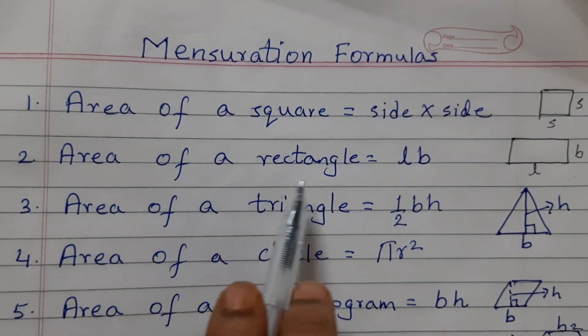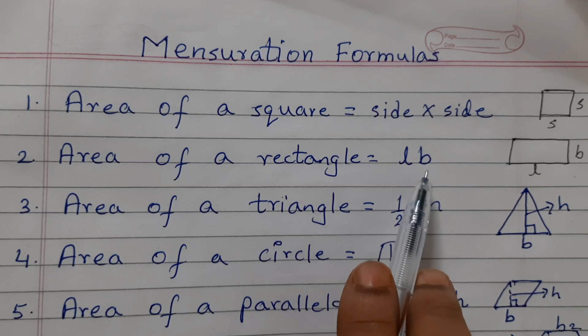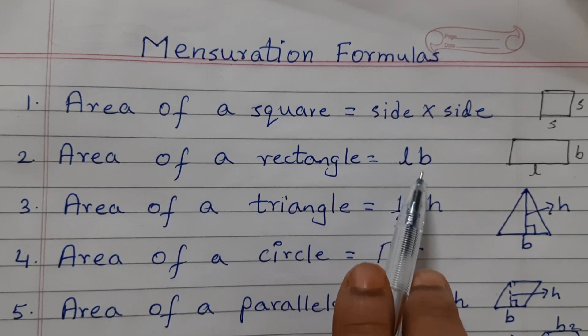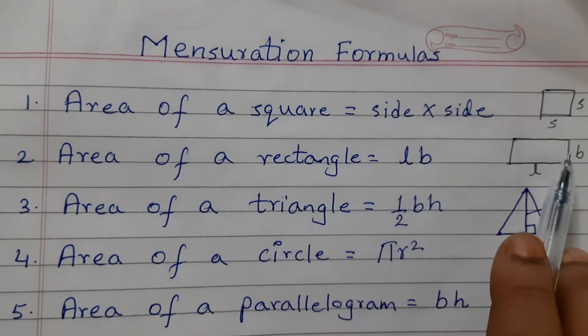Area of a rectangle is equal to length into breadth. L stands for length, B stands for breadth. So this is L and this is B.